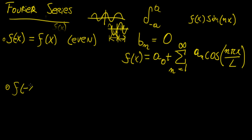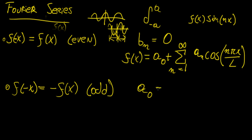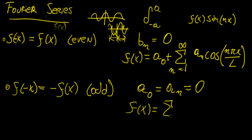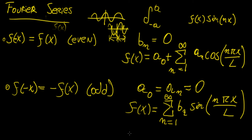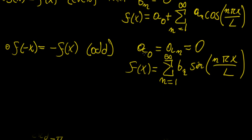If f is odd — satisfying f(-x) = -f(x) — then both a₀ and aₙ will be 0. This means f(x) reduces to f(x) = Σ bₙ sin(nπx/L). We need to know this because computing these integrals is a fairly tedious task, so any simplification that we can make will make our lives a lot easier.